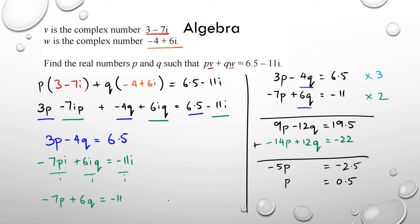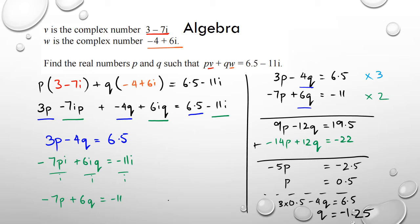So negative 22 and 19.5 gives negative 2.5, therefore p equals 0.5. Once I have that I substitute back: 3 times 0.5 minus 4q equals 6.5, and solving gives q equals negative 1.25. You don't need to show simultaneous equations — you can do it in your calculator straight away.